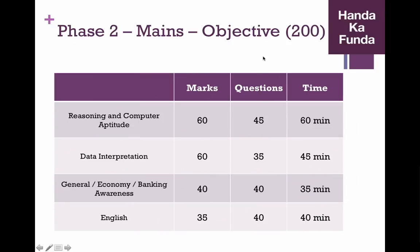Then the mains exam will be of an overall 200 marks. It will consist of four sections: reasoning and computer aptitude. This was not there last year, so they have mixed up reasoning and computer aptitude. There will be 45 questions for 60 marks. So I'm assuming what might happen is the computer aptitude questions would be one mark each, whereas the reasoning questions would be two marks or something like that. There might be some reasoning questions which are of one mark also.